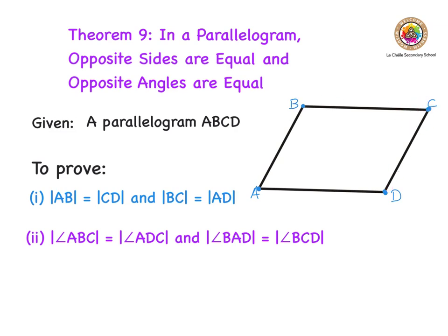Just to make it easier to remember, I've put those in different colours. I'll underline these two angles in red and mark those off, so this angle here is equal to this angle here, and I'll put a little line through those. Then I'll do the same in green: angle BAD gets two lines, and angle BCD gets two lines as well.